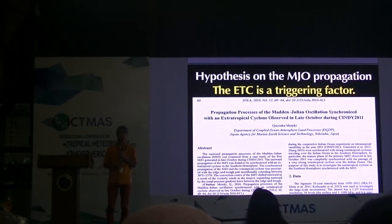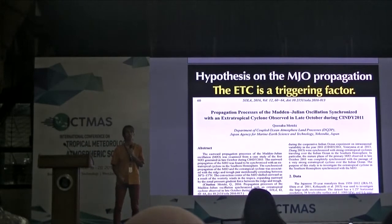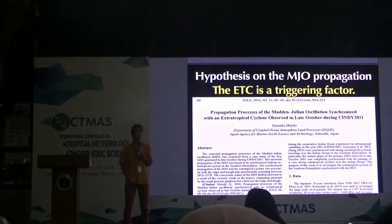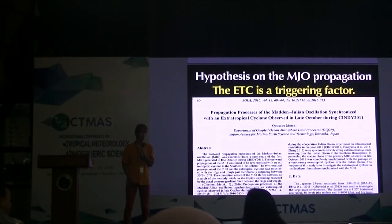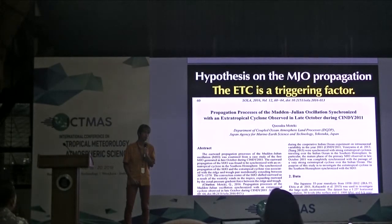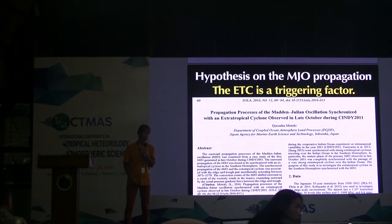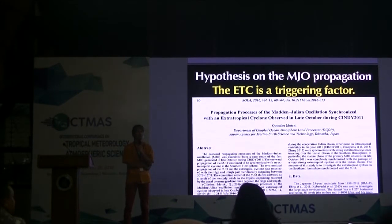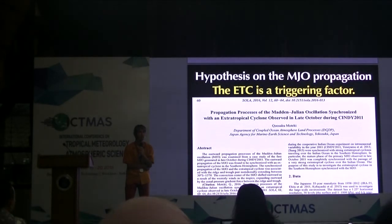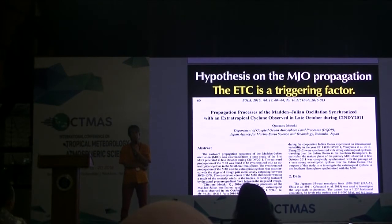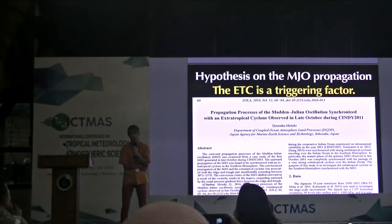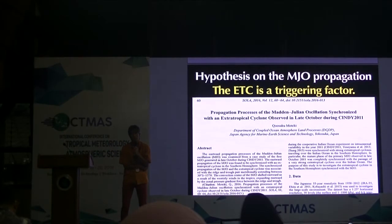Any questions? Thank you for your presentation. Regarding the coupling or interaction between a system like MJO and the extratropical cyclone — I want to ask: is there any relationship between the scale of the systems themselves? For example, when we talk about modulating — the MJO will somehow modulate higher frequency oscillations like a Kelvin wave or other tropical waves. In your study, the coupling between the extratropical cyclone and MJO — does this coupling happen because the scale is similar, spatially or temporally, or is there a different scale but a kind of modulating system?